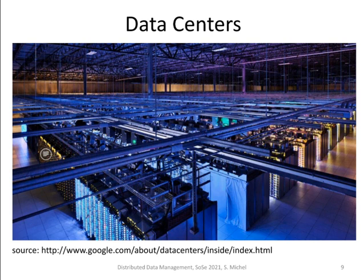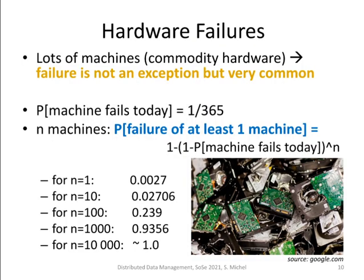Here's another illustration of a data center. If you go to Google, you know Google Street View, but there is also a Google data center view where you can walk through a data center. Now, let's assume we went for a scale-out solution and bought more and more machines. What does it mean regarding hardware failures? We assume the probability of one machine failing on any given day is 1 divided by 365 — meaning a machine fails in expectation once a year. This seems like a reasonable assumption, perhaps even less, but it's the right order of magnitude: one disk or CPU failure per year.